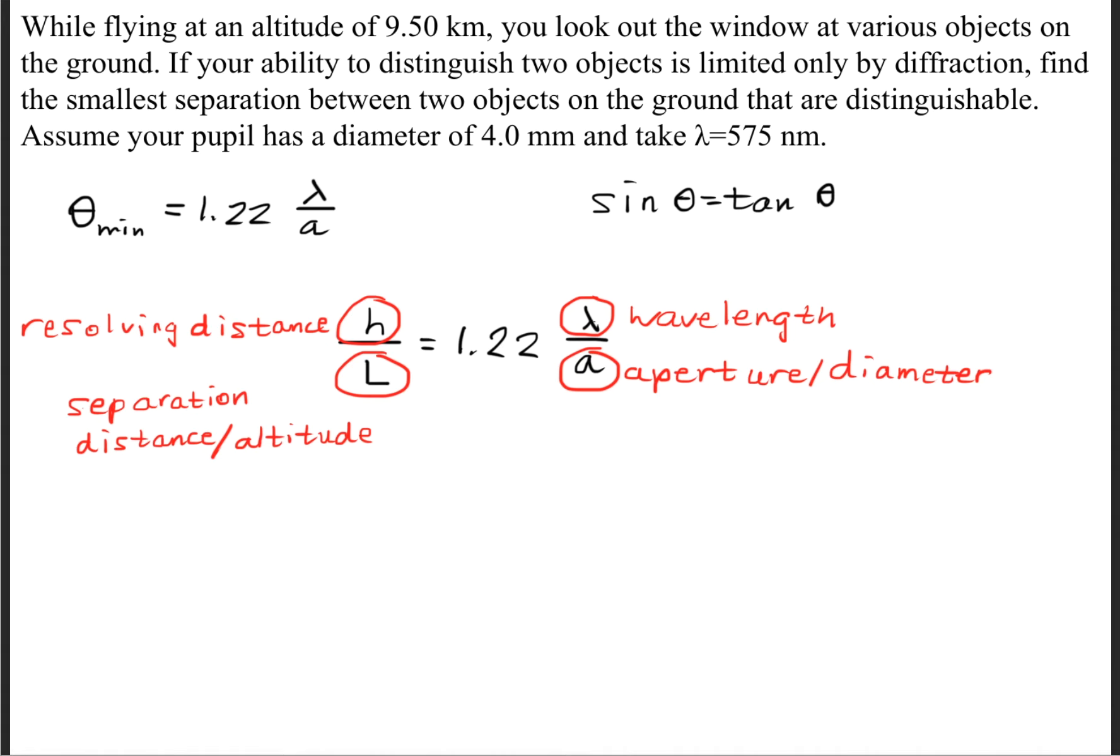So let's figure out what this question is asking. It says find the smallest separation between two objects on the ground that are distinguishable. So we are going to be solving for this h variable right here.